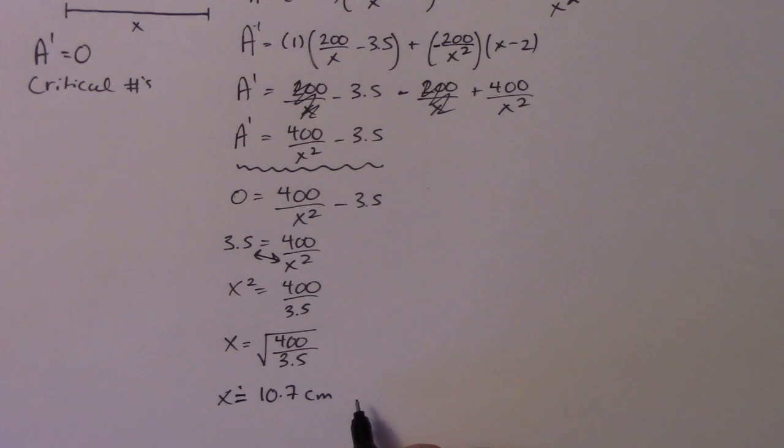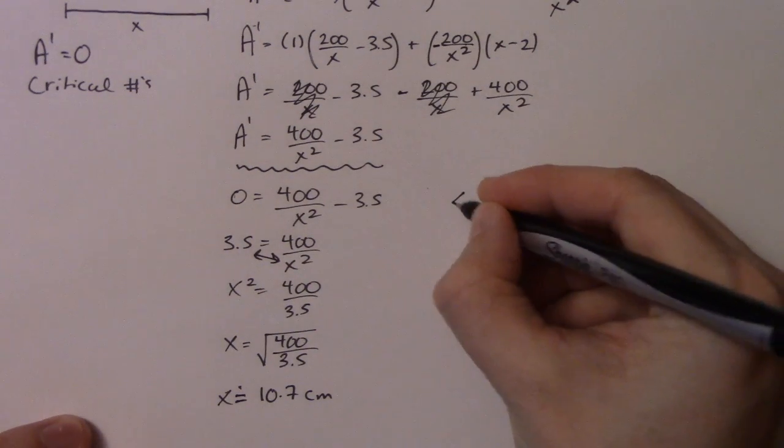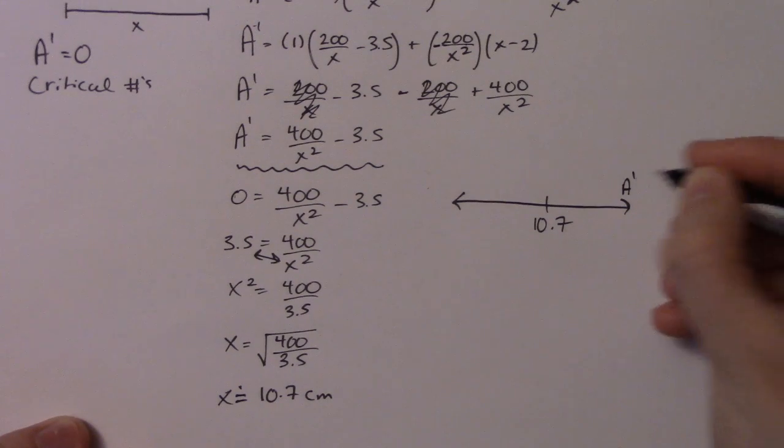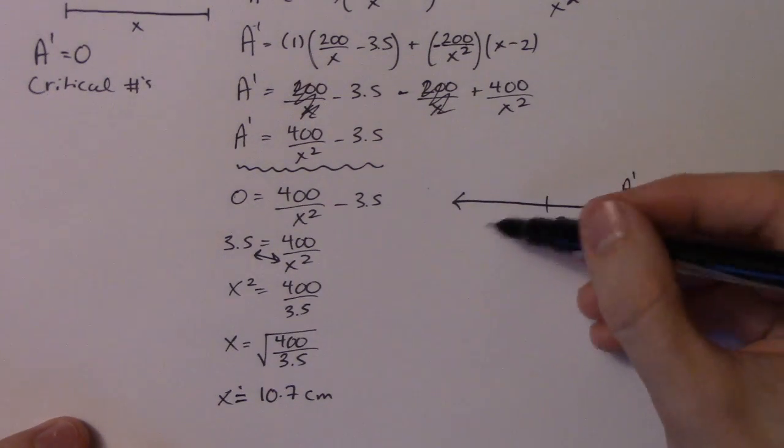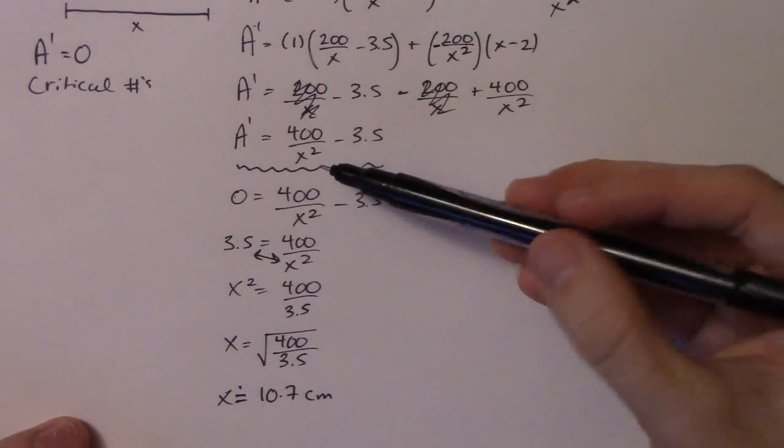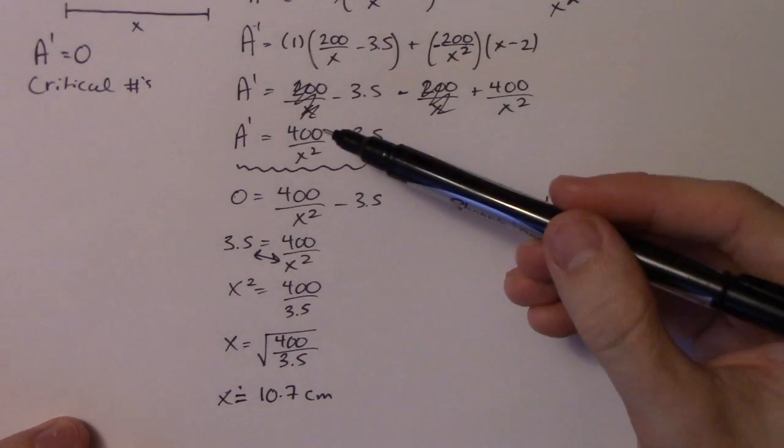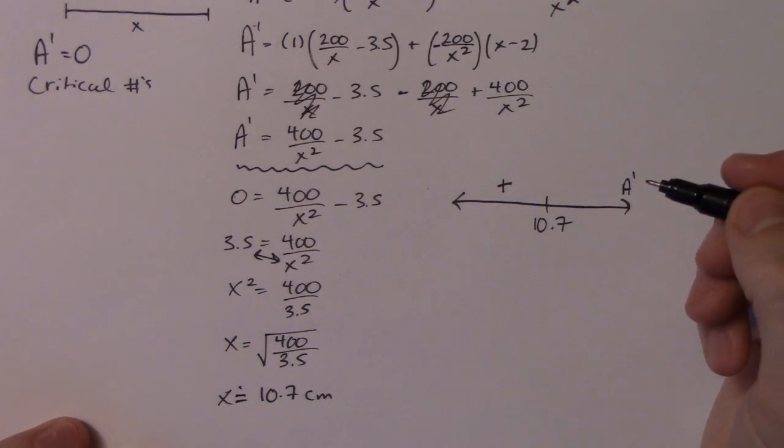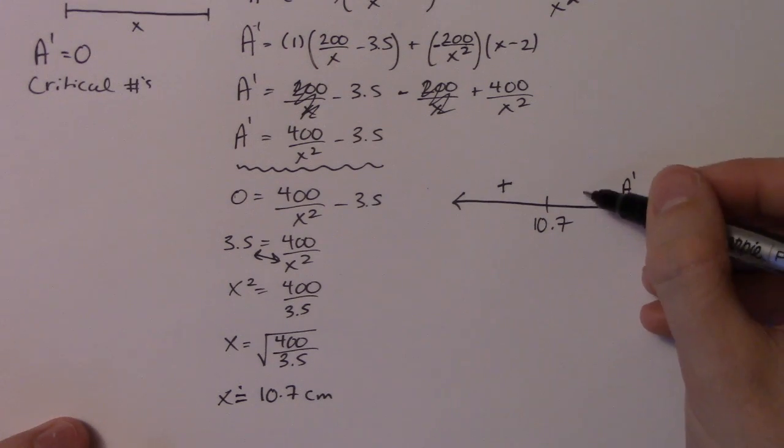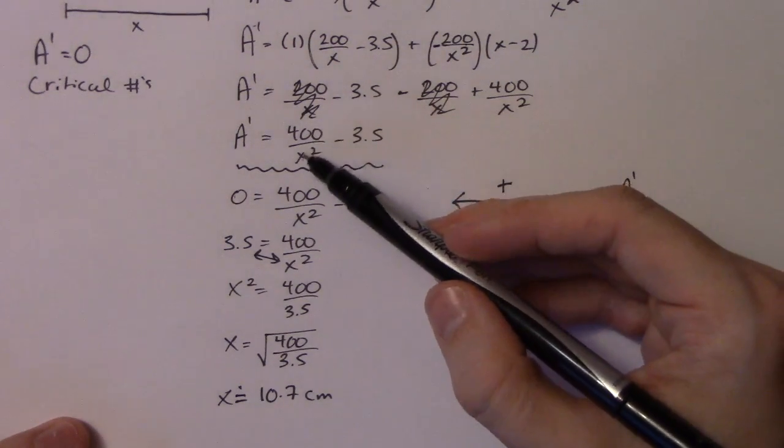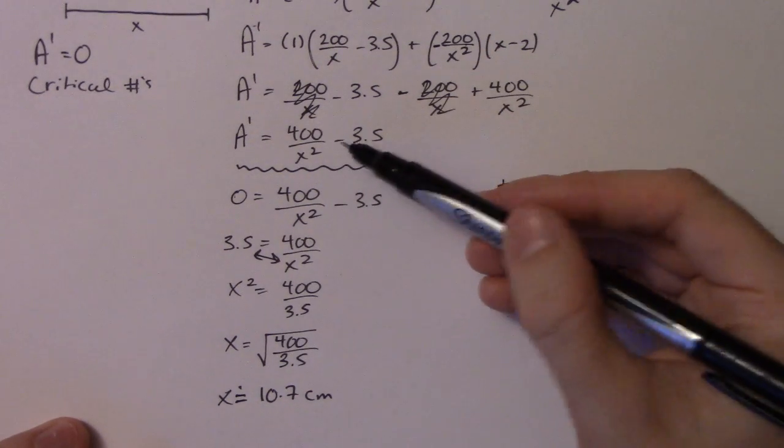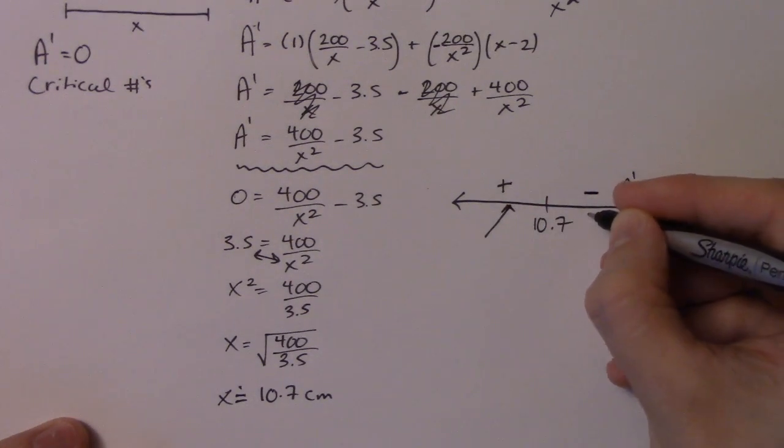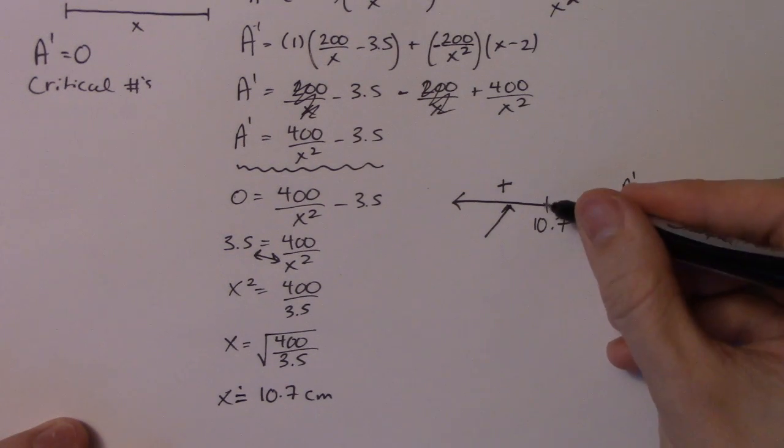So now I need to go ahead and prove that that is indeed a max value. So what I'll do is I will put 10.7 on a number line with A prime. So what I want to do is figure out if this is plus or this is minus and see what's happening. So I go back to my original derivative and I pick a number in here. So I'll pick 1. So 400 divided by 1 squared is 400 minus 3.5 is a positive number. I don't need the actual value, I just need to know if it's positive or negative. So if I choose a number in here, say 100, I'd have 400 divided by 100 squared, which would be really close to 0. Subtract that, so that's going to be negative. So what I have happening is the graph is increasing, then it goes to decreasing. So in order for that to happen, what's happening at 10.7 must be a max.